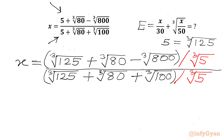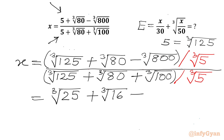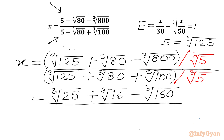Cube root of 125 over cube root of 5 will be cube root of 25. Cube root of 80 over cube root of 5 is cube root of 16. Minus cube root of 800 over 5 will be cube root of 160. In the denominator: cube root 25 plus cube root 16 plus cube root of 100 over 5, which is cube root 20.